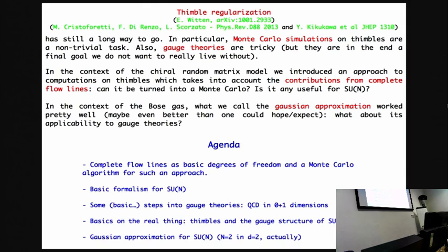Marco was also involved. Everything started with Witten, as you probably understood from the previous speaker as well. I was fascinated by this fact that completely independently, our group and the group in Japan by Yoshua Kikukawa were doing exactly the same. My agenda will be a Monte Carlo algorithm in order to take into account complete flowlines as basic degrees of freedom while integrating on the thimbles.